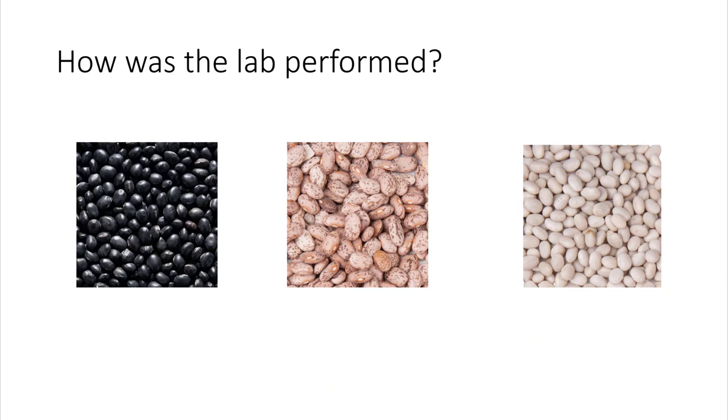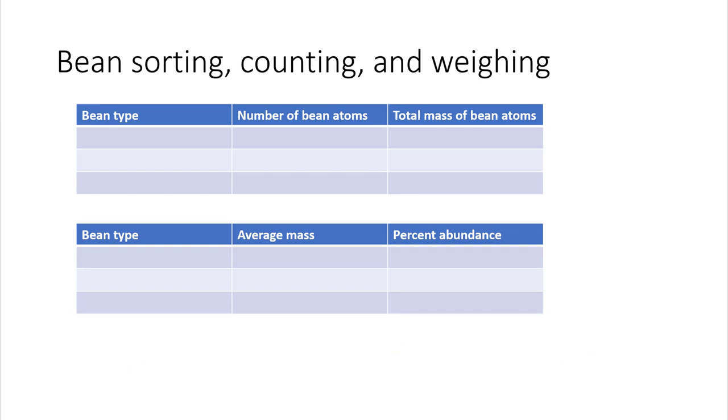In this lab, you're given different beans, so you're investigating the bean atom and the beans that we used were black beans, pinto beans, and navy beans. And you got a mixture of these different amounts of beans in a bag and what you had to do, you had to sort them into each kind of bean, count them, and weigh them.